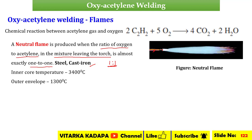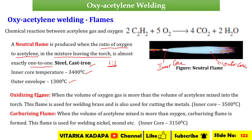If you observe the neutral flame, from the welding tip you can see the inner core and the outer core. The inner core temperature is 3400 degrees Celsius, whereas the outer core temperature is 1300 degrees Celsius. The inner core appears blue, and the outer core is dark orange mixed with light blue.